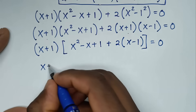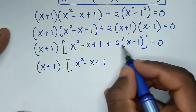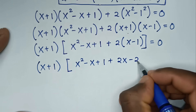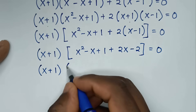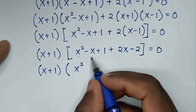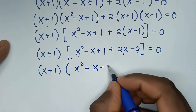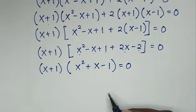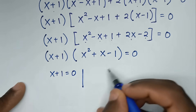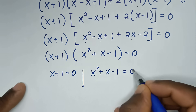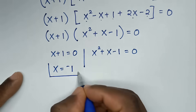Then it will be x plus 1 bracket, x² minus x plus 1 plus 2x minus 2 bracket, is equal to 0. So it will be x plus 1 bracket, x² plus x minus 1 bracket, is equal to 0. From here, we have two solutions: x plus 1 equals 0, and x² + x - 1 equals 0. From x plus 1 equals 0, we take 1 to this side, so x equals negative 1. That's the second solution.